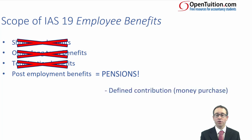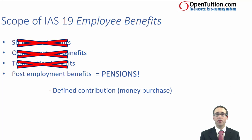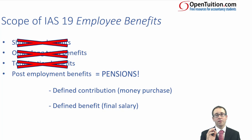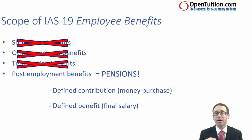When looking at pensions, there are two types. The first is referred to as your defined contribution pension scheme, which in the UK you may hear discussed as your money purchase scheme. The other is referred to as your defined benefit scheme, also known in the UK as your final salary scheme. Defined contribution and defined benefit are very different in terms of schemes, and the accounting treatment is also very different. Defined contribution is much more straightforward than the defined benefit scheme.